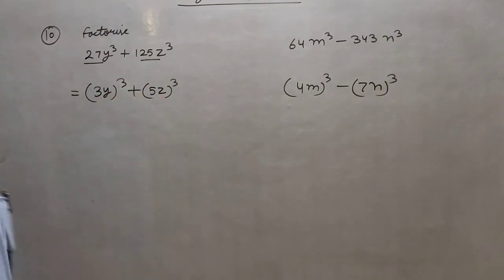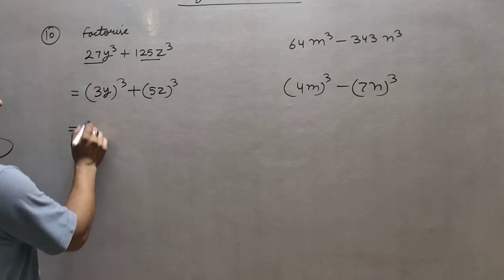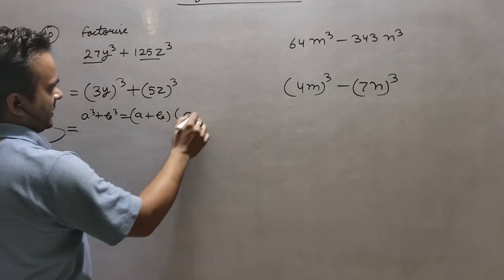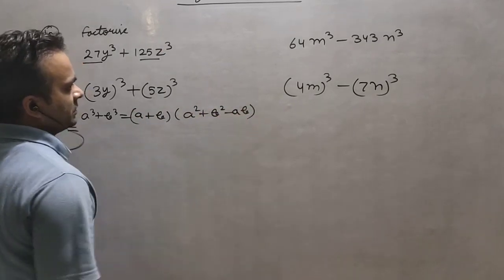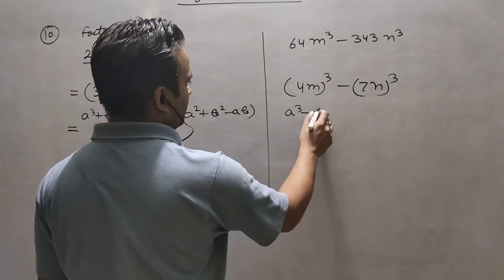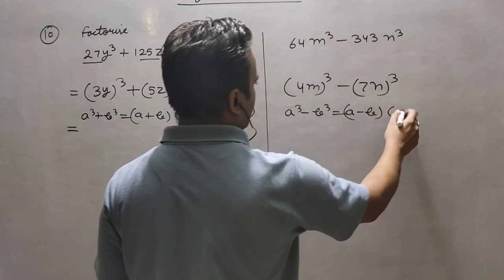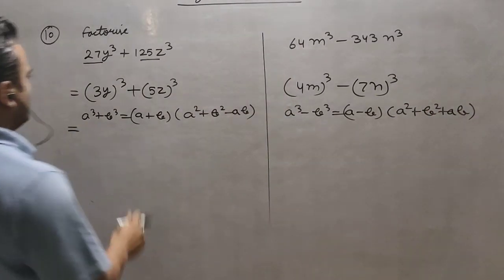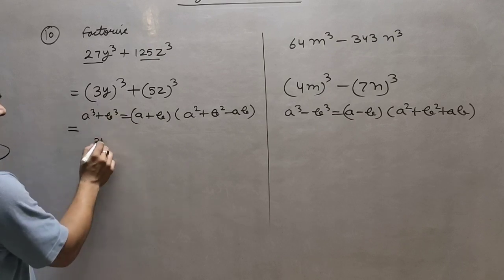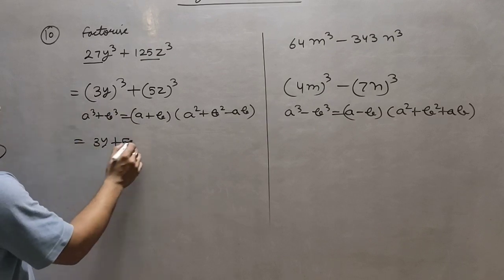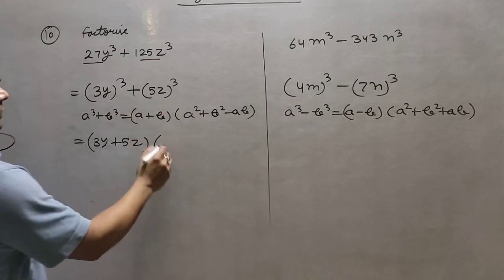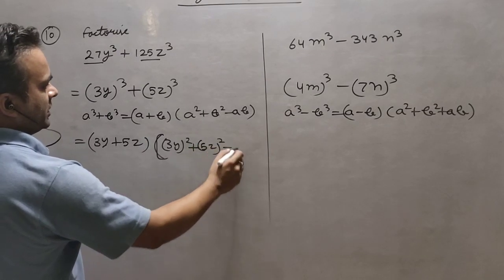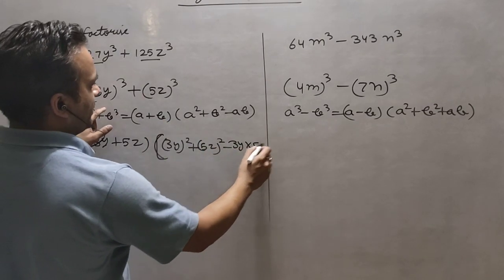So what is the identity? a³ + b³ = (a + b)(a² - ab + b²). And a³ - b³ = (a - b)(a² + ab + b²). So putting a = 3y and b = 5z, we get (3y + 5z) multiplied by (3y)² - (3y)(5z) + (5z)², which is (3y)² minus 3y into 5z.